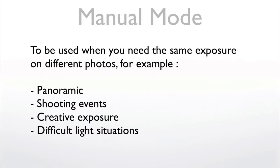The manual mode is a mode I use quite often — either AV mode or manual mode. Manual mode is very different from AV and TV because you decide both the f-stop and the time. When do we use manual mode? When you need the same exposure on different photos — panoramics, shooting events, creative exposures, or difficult light situations.